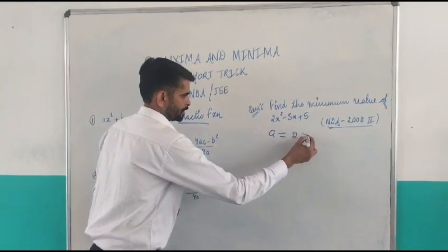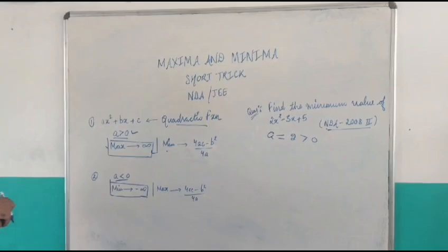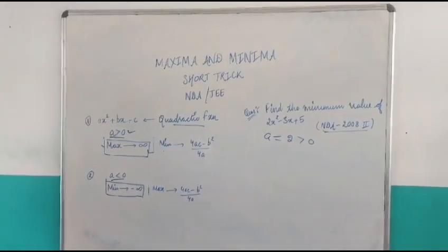So, here A is equal to 2, which is positive. So, we have to find out minimum value.